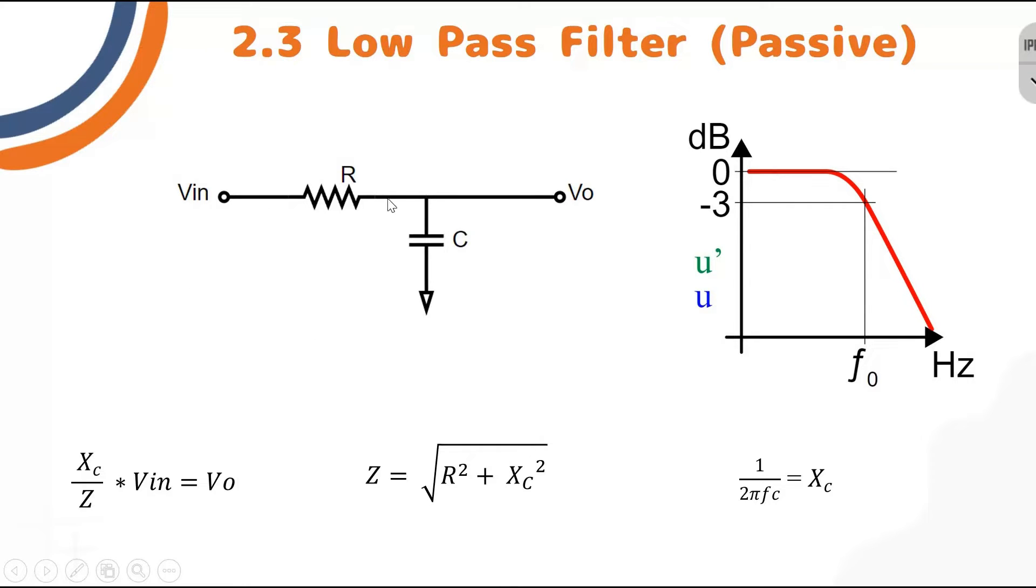So how does the low pass filter work? The low frequency signals will go toward the output, whereas the high frequency signals will be sent to the ground through the capacitor. This is how the low pass filter works: it passes low frequency signal and sends the high frequency signal to the ground.